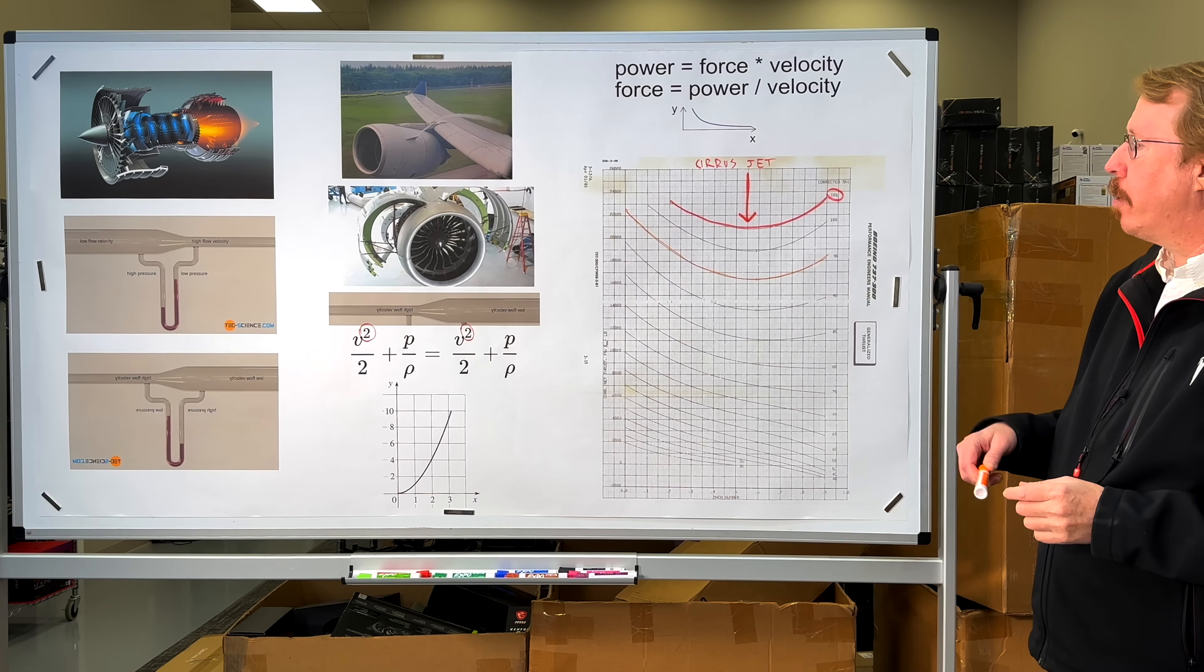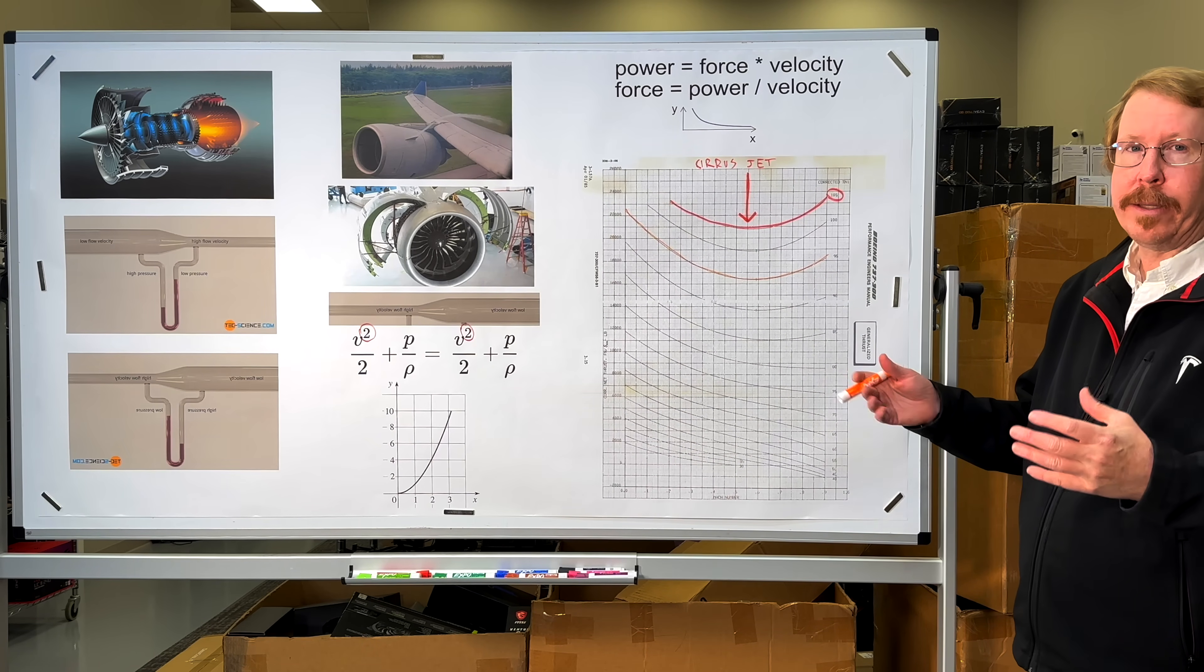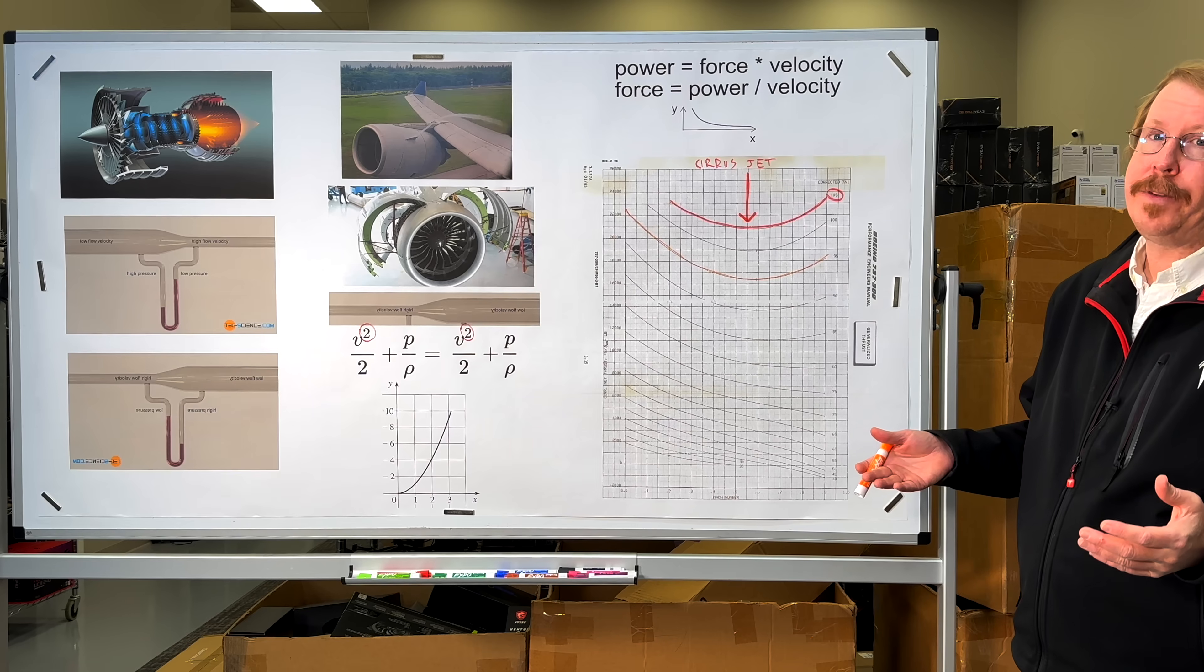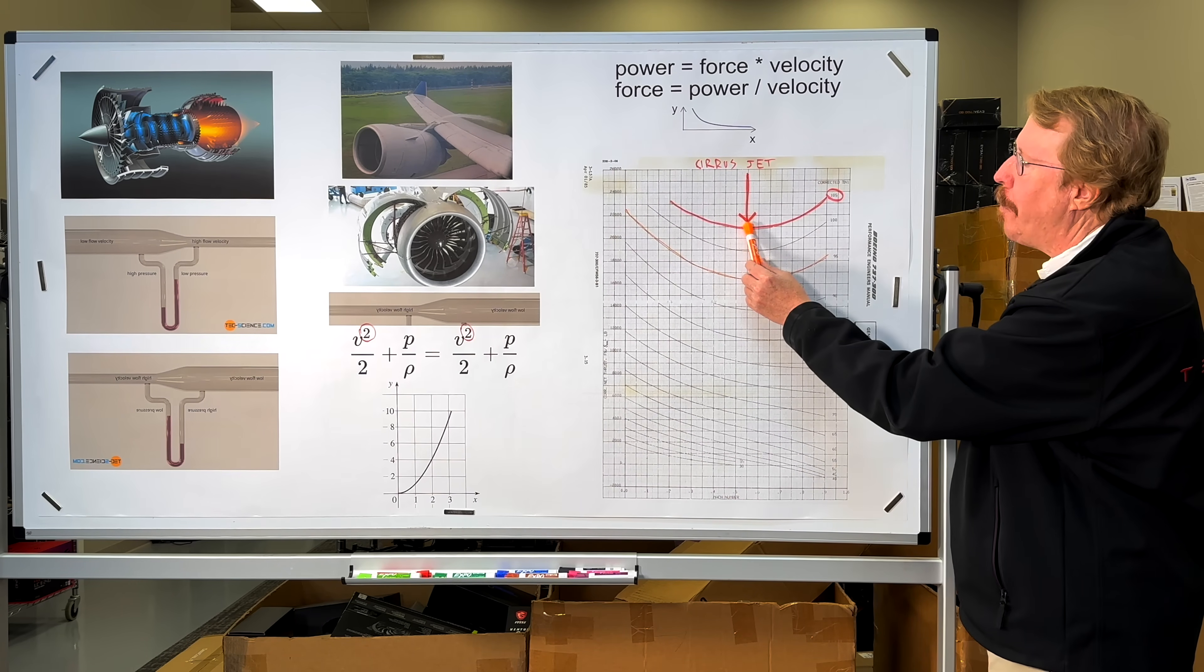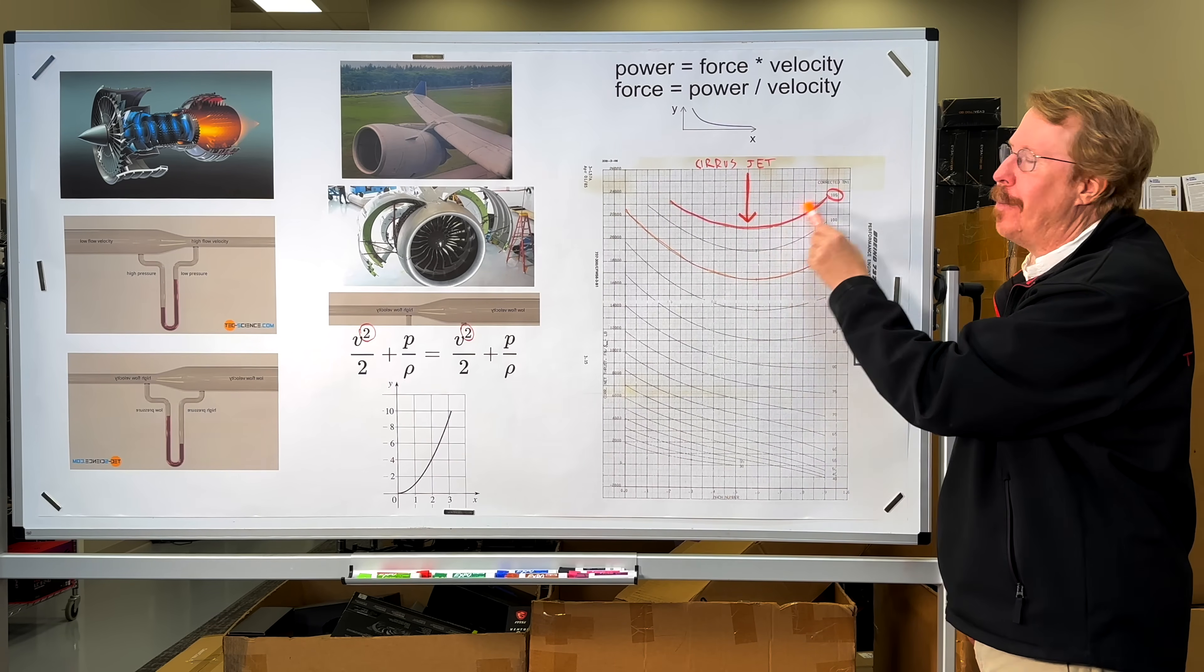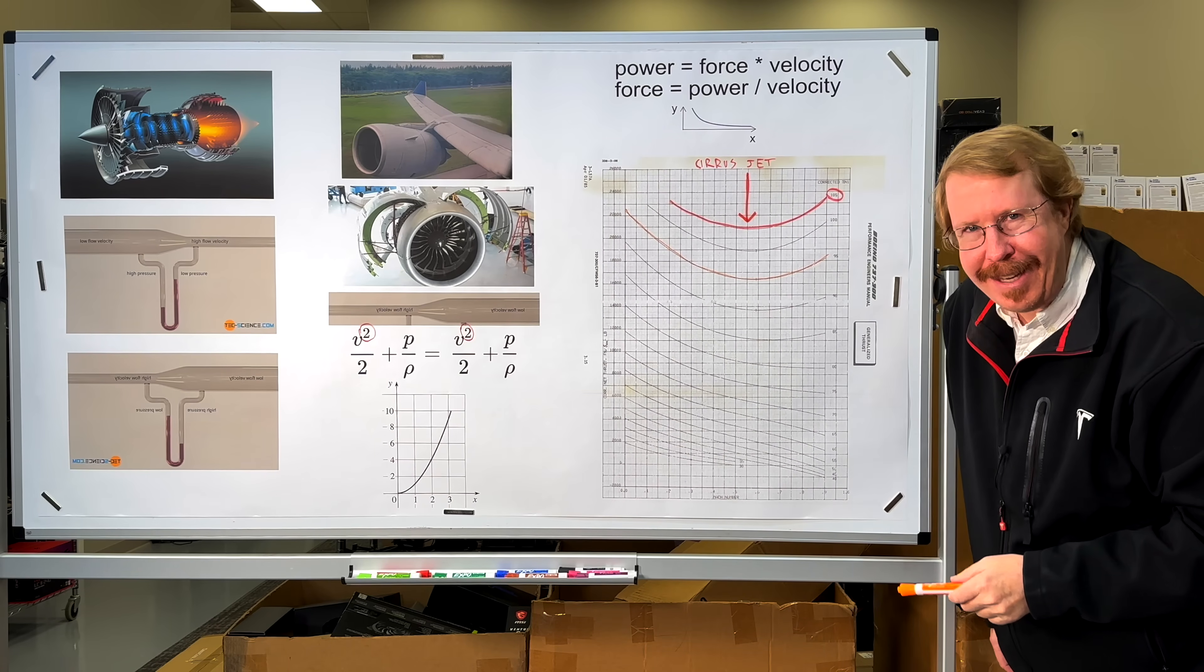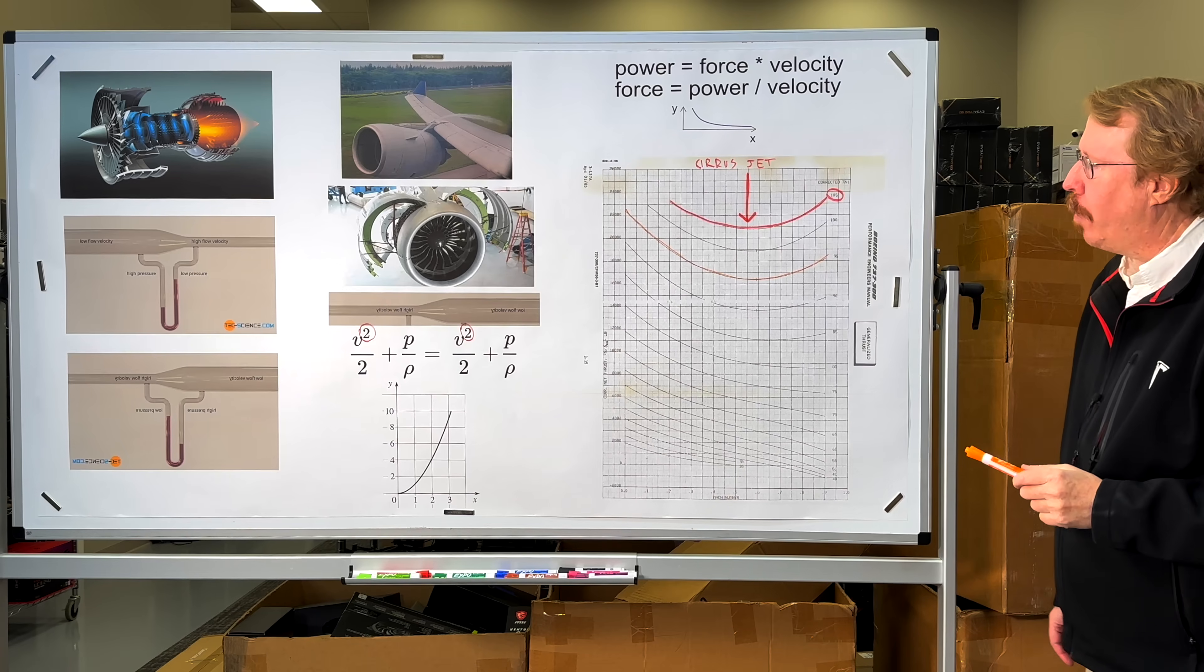Now, a little note here, the poor little Cirrus jet with its fat tubby little body and fat wing and tiny little compressor, it doesn't have the juice to go any faster than about Mach 0.5. So it operates right here. It can't build up enough speed to get the benefit of the extra speed. So that little guy operates at the worst possible point in the thrust curve.